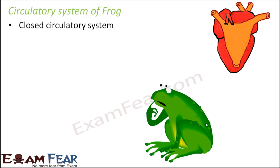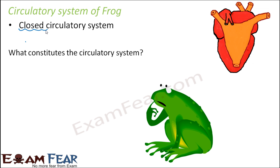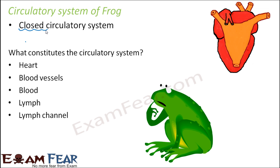Frogs have a closed circulatory system, which means the blood is confined to specific tubular structures called blood vessels, and we do not see organs floating in blood. The circulatory system is made up of the heart, blood vessels, blood, lymph, lymph channels, and lymph nodes.